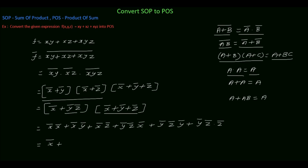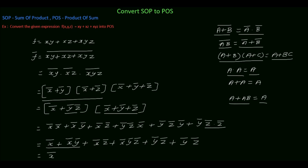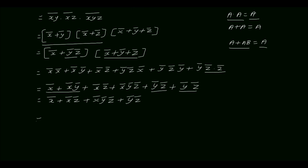Since a dot a equal to a, x complement dot x complement simplifies to x complement. Applying a plus ab equal to a, terms reduce. y complement dot y complement equal to y complement and z complement dot z complement equal to z complement, so several terms absorb into x complement.